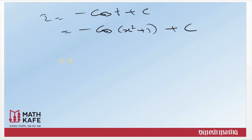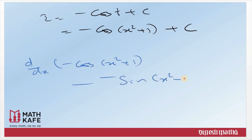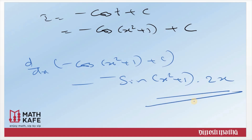Don't stop here. Let us cross check whether our answer is correct. Replace t with the original variable: we get minus cos(x² + 1) plus C. What is the derivative of minus cos(x² + 1)? Using chain rule: negative of negative sin(x² + 1) into 2x, which gives sin(x² + 1) into 2x. That is exactly our question, so we are absolutely right.